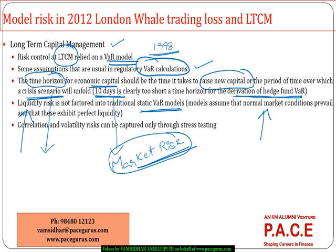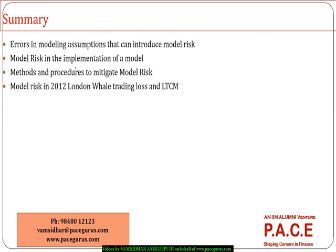Though LTCM had two big Nobel laureates on the board and a lot of mathematical rigor going into the development of the model, a couple of wrong assumptions resulted in one of the biggest financial disasters in the last 20 years. We have to be very careful looking at model risk — it can play a very significant role. There could be errors in modeling assumptions, issues with implementation, and we have looked at what various procedures are available to mitigate model risk, as illustrated by these two big disasters.